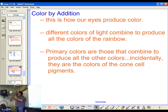Color by addition. It's how the television works, how your LEDs work. This is how the eyes produce color. Different colors of light combine to produce all the colors of the rainbow. The light that makes yellow hits your eyes and activates the little cone cells.